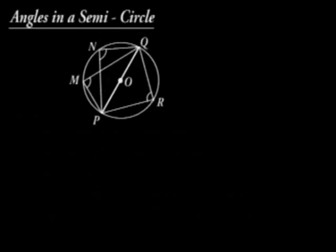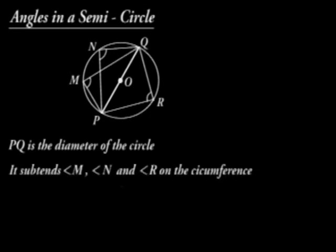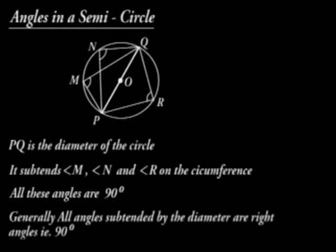Angles in a semi-circle. PQ from the figure is a diameter of the circle. It subtends angles M, N and R on the circumference. All these angles are 90 degrees. Generally, all angles subtended by the diameter are right angles.